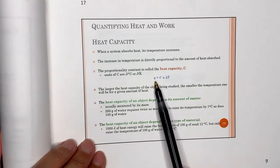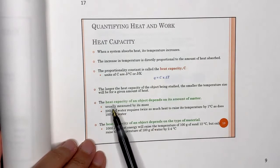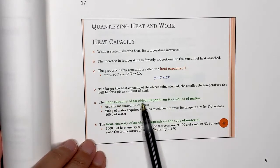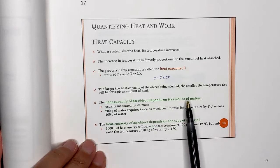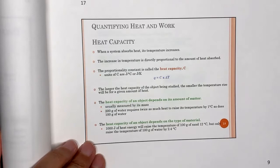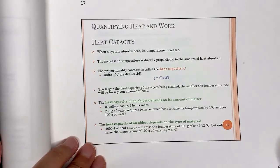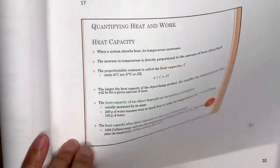Heat capacity C is used in the formula: heat equals C times the change in temperature (q = C·ΔT). Heat capacity depends on how much material you have and the type of material. Different materials have different heat capacities — water has a much higher value than aluminum.